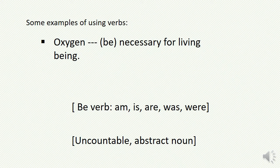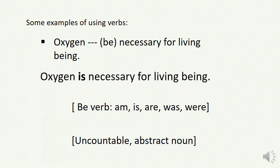Look at our first example: 'Oxygen ___ necessary for living beings.' What do we need to put in the gap? Think about the subject. Here the subject is 'oxygen' — it is an uncountable abstract noun. We all know that the be verb means am, is, are, was, were. So for the subject 'oxygen' we have to use the auxiliary verb 'is.' The correct sentence will be: 'Oxygen is necessary for living beings.'